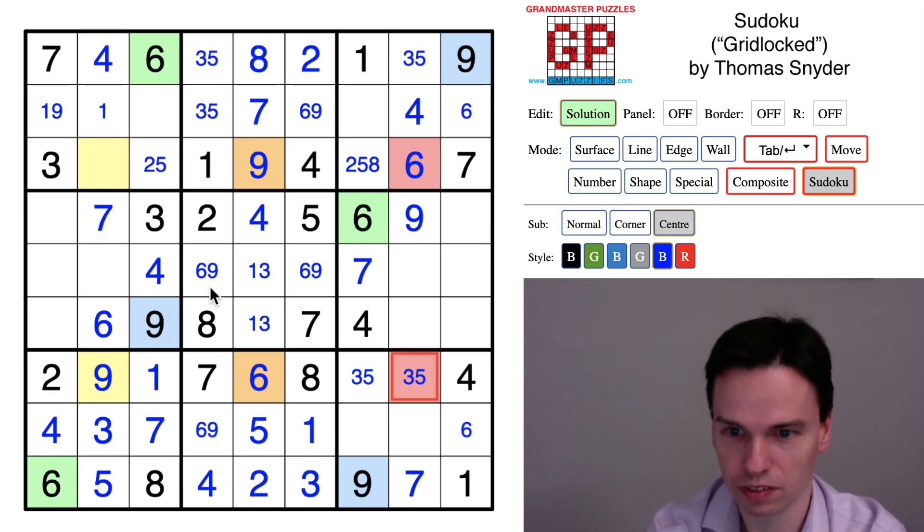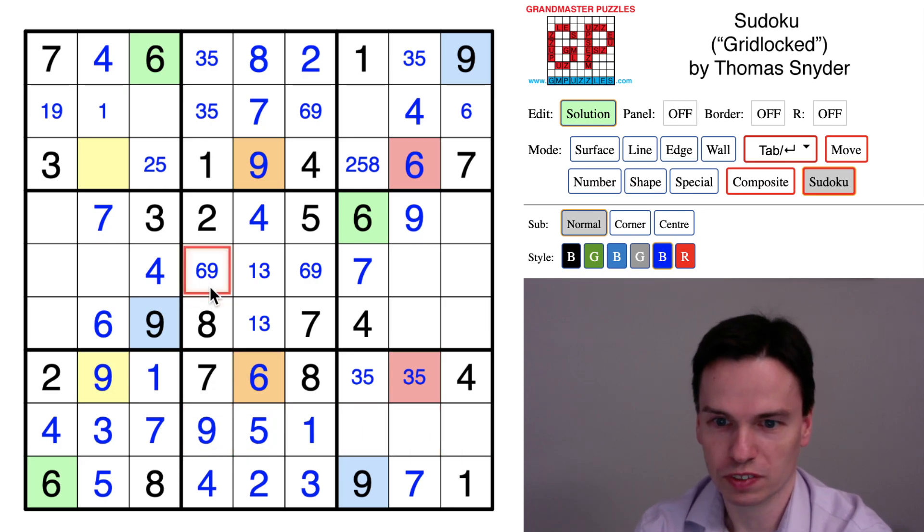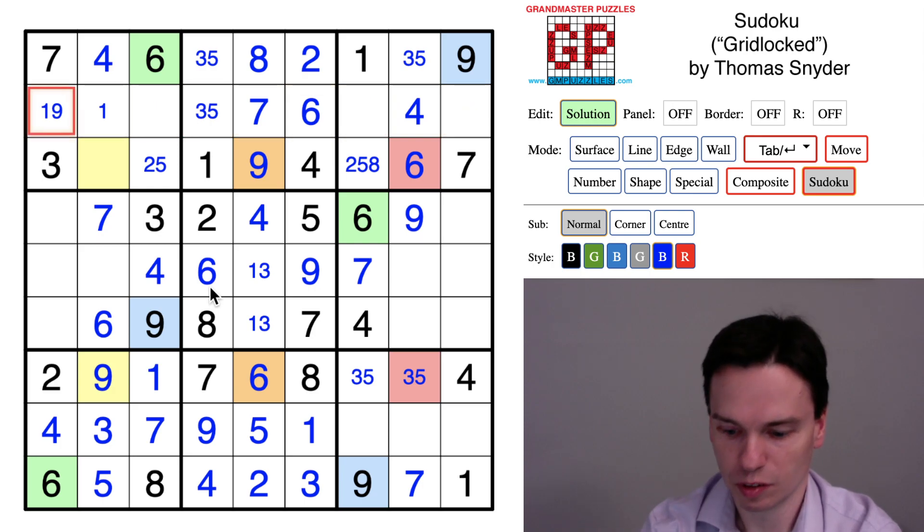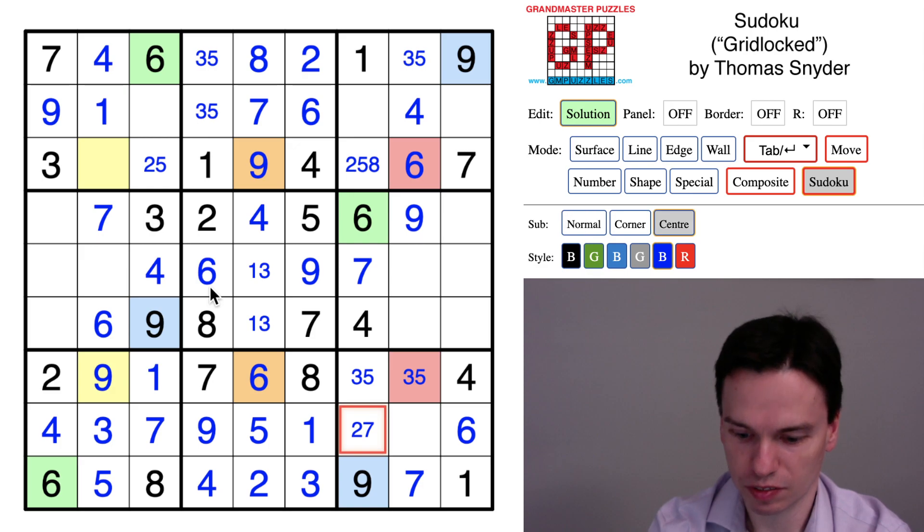We have another three, five coming across, the six places a nine, nine, six, six, this is a nine, this is the last spot for a one, down here this is a six, and we have a two eight left to go.